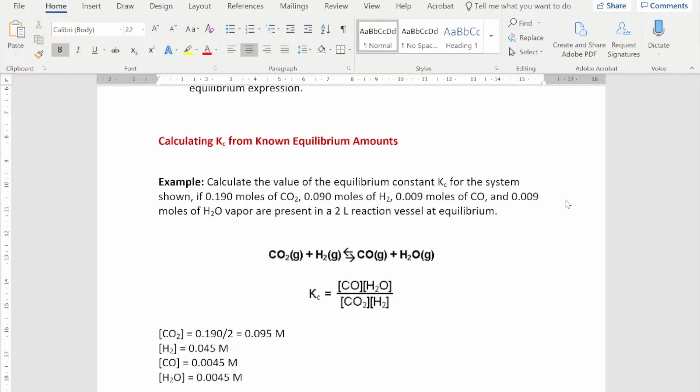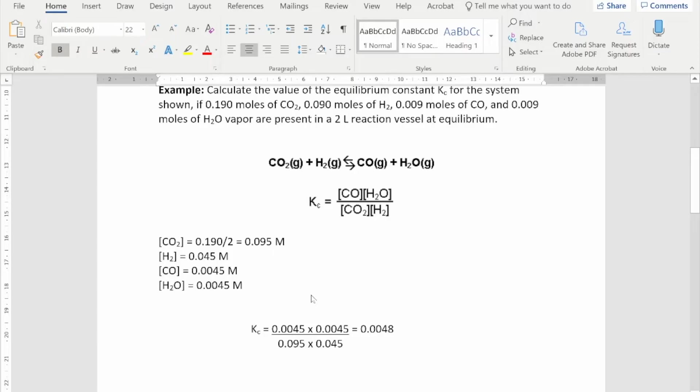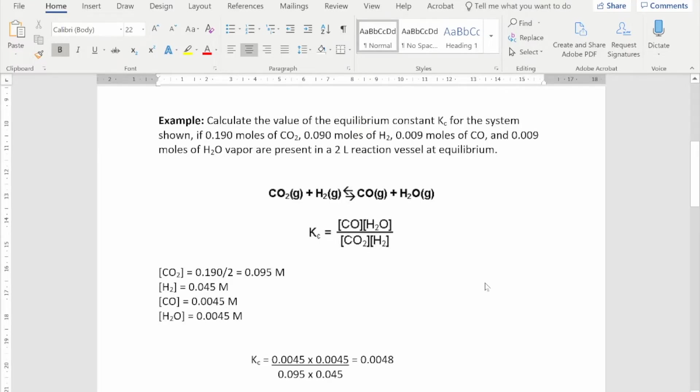Now then, if you are given numbers of moles and you are given a volume, then these square brackets indicate moles per liter. So you do have to change any values into moles per liter. So since this is a two liter vessel, all four of these will need to be divided by two to get their concentrations at equilibrium. We now substitute those into the equilibrium expression, and the rest of it is simply calculated work. So that was a fairly straightforward example where you are given the equilibrium quantities.